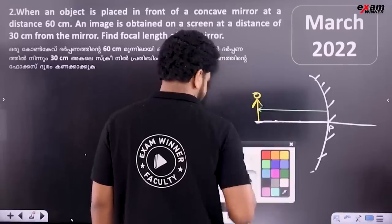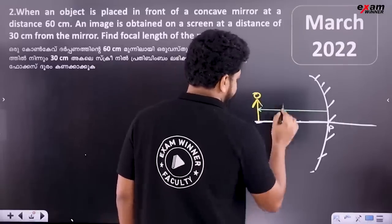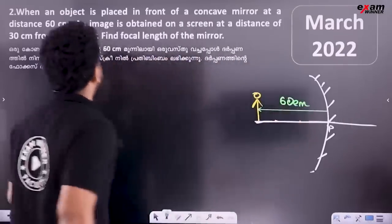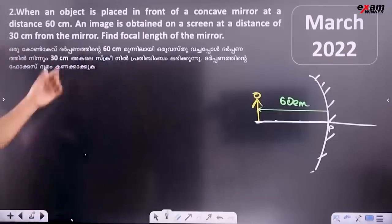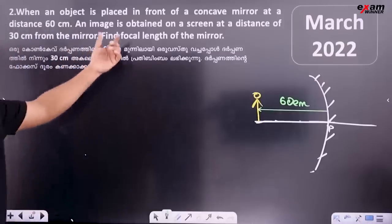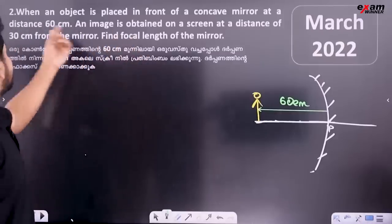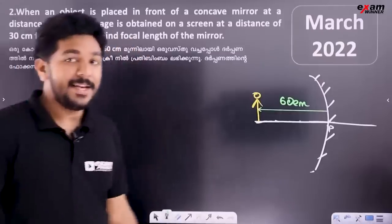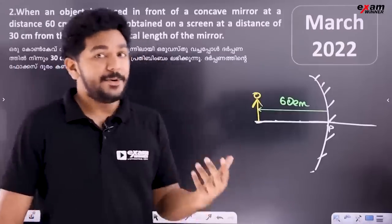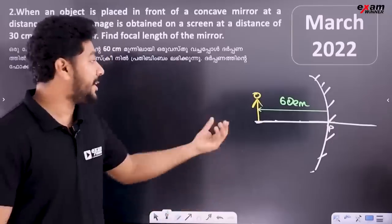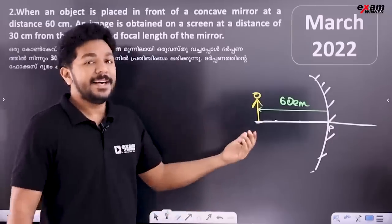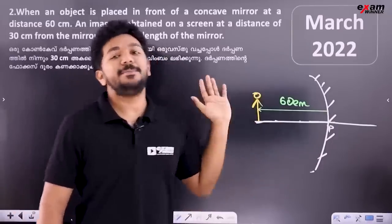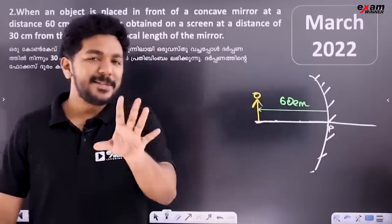The object distance is 60 cm. An image is obtained on a screen at a distance of 30 cm from the mirror.